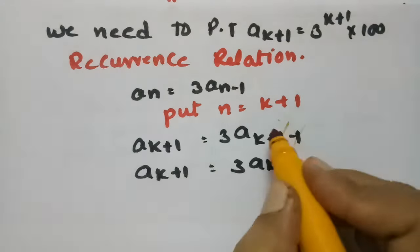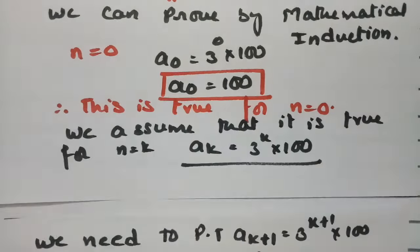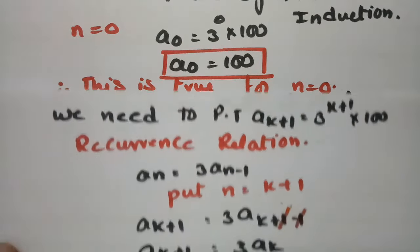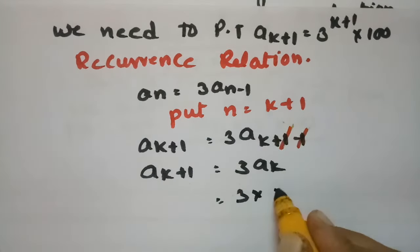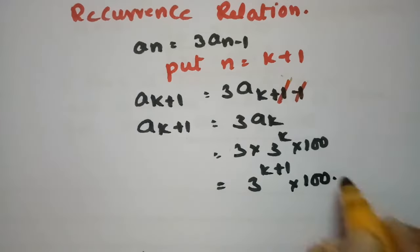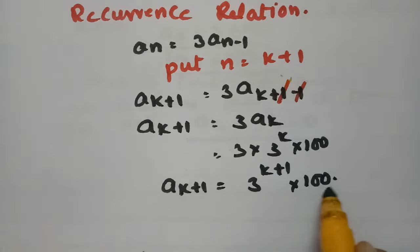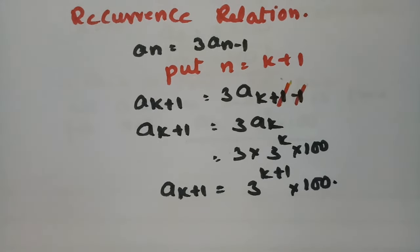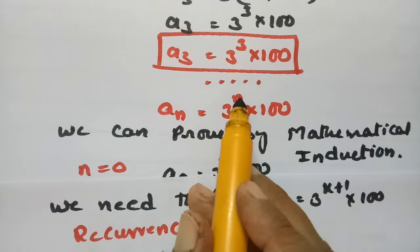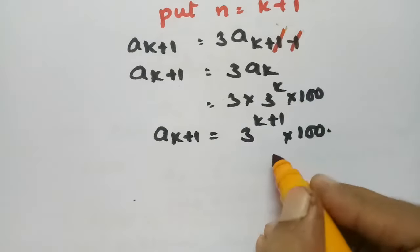AK plus 1 equals 3 times of AK. What is AK? From our assumption, AK equals 3 to the power K into 100. So AK plus 1 equals 3 times of 3 to the power K into 100, which can be written as 3 to the power K plus 1 into 100. We started with LHS and got RHS, so LHS equals RHS.